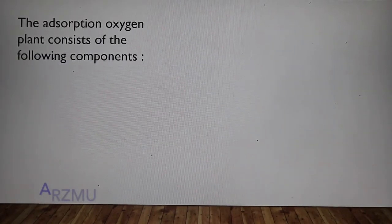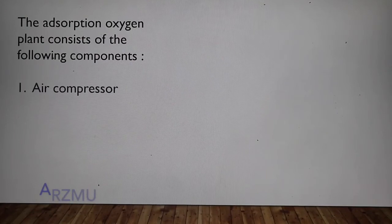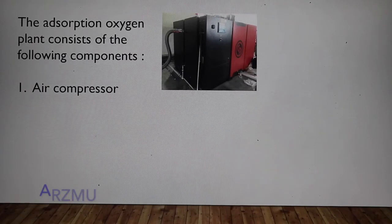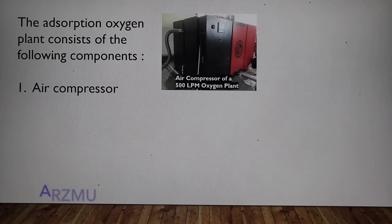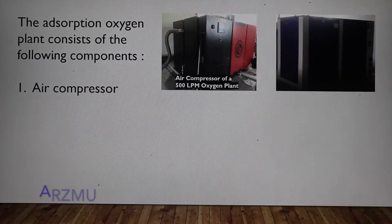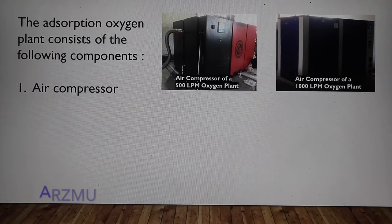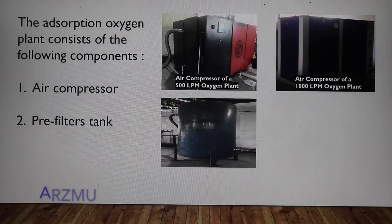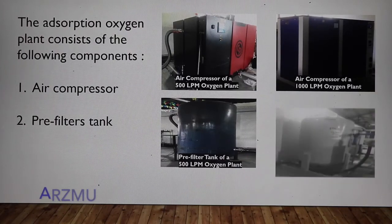The important structural components in an adsorption oxygen plant are the air compressor — shown here for a 500 litre per minute oxygen plant and a 1000 litre per minute oxygen plant — and the pre-filters tank of a 500 litre per minute oxygen plant and pre-filters tank of a 1000 litre per minute oxygen plant.